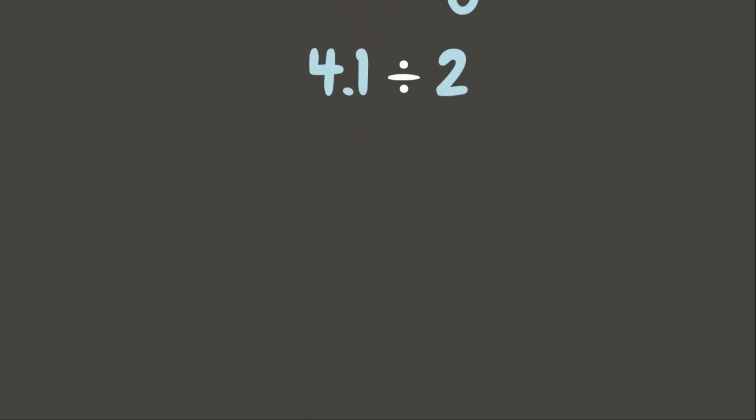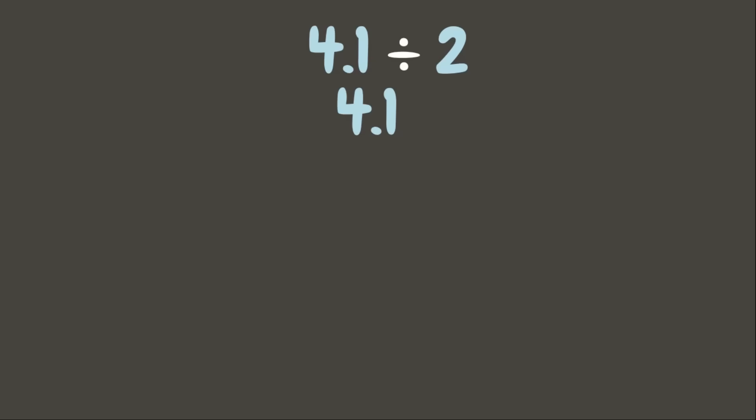Now let's have another one. This time we are going to divide a decimal by a whole number: 4.1 divided by 2. Since the divisor is already a whole number, there's no need for us to move the decimal point. We are simply going to divide like whole numbers. But first, let's put the decimal point directly above the dividend.